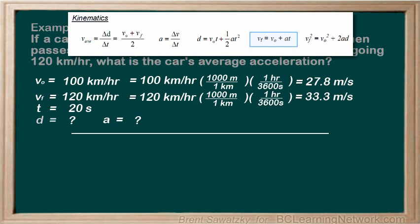How about vf equals v0 plus at. This one has an a in it, good. It doesn't have a d in it, which is also good, they are unknown. It has a t in it, we know the time. It also has a vf and a v0, both of which we know.